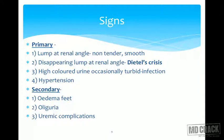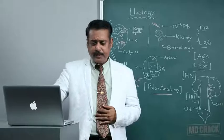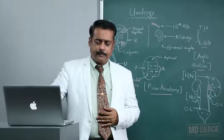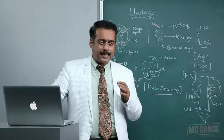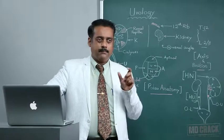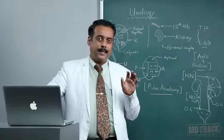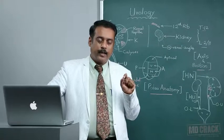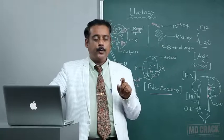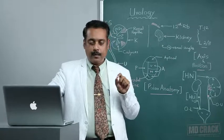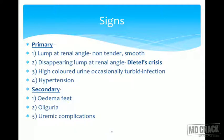Secondary pressure symptoms include pedal edema and oliguria. Oliguria is defined as urine output of less than 400 ml over 24 hours; normal urine output for an adult is up to 1.5 liters per day. Uremic complications include puffiness of the face; periocular edema is typical of uremia.